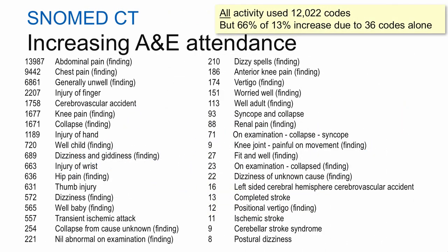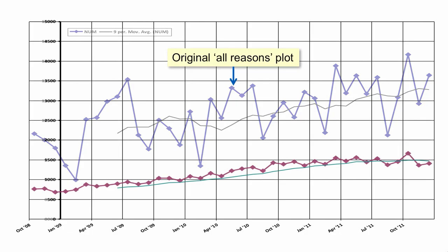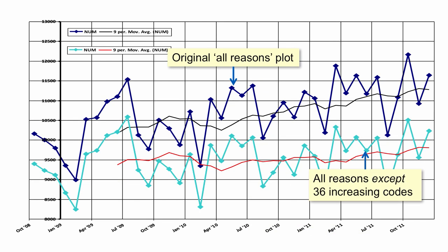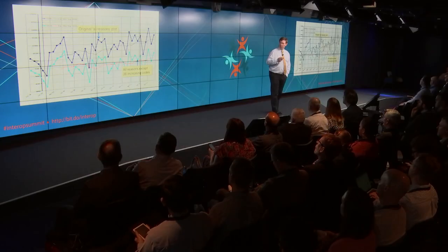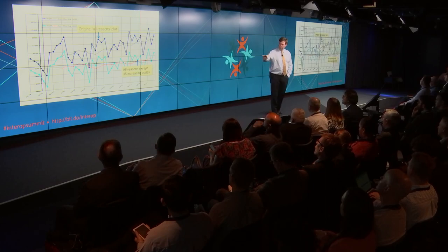So a hot topic — where has this increase come from? We looked at the SNOMED data and it's possible, after a certain amount of analysis, to narrow down that increase to just 36 codes out of the 12,000 that were selected, which account for about two-thirds of that increase. The red line shows patients coming with one of those 36 specific SNOMED codes, and the remaining 11,900-plus codes are broadly speaking static.